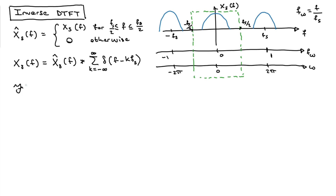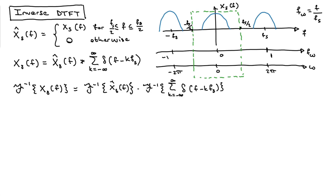Now I take the inverse Fourier transform on both sides. What happens to that convolution? Convolution becomes multiplication — awesome. The inverse Fourier transform of the impulse train is another impulse train: it equals (1/Fs) times an impulse train in the time domain.